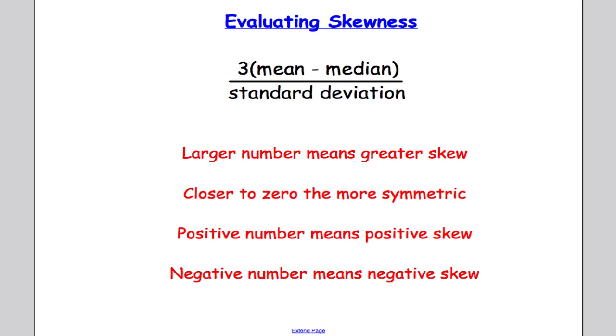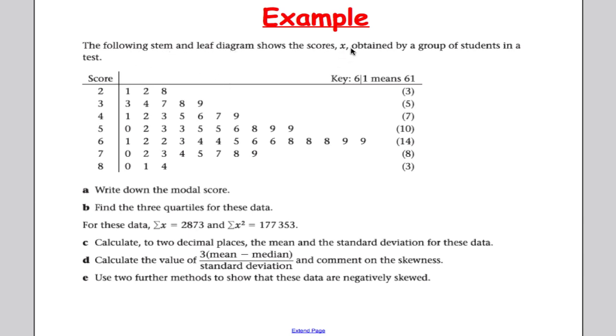So let's take a look at an example here. We've got the stem and leaf diagram of a group of students in a test, and I'm asked to write down the modal score. This one is fairly straightforward. You can see that 68 crops up more than anything else, so 68 is my mode.